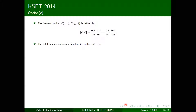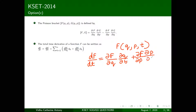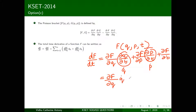Now we want to find the total time derivative of function f, which depends on q, p, and t. Taking the total derivative with respect to time: df/dt = (∂f/∂q)(dq/dt) + (∂f/∂p)(dp/dt) + ∂f/∂t. This becomes (∂f/∂q)·q̇ + (∂f/∂p)·ṗ + ∂f/∂t.